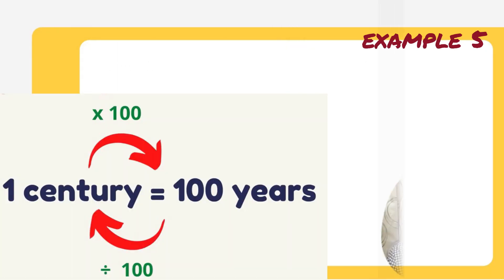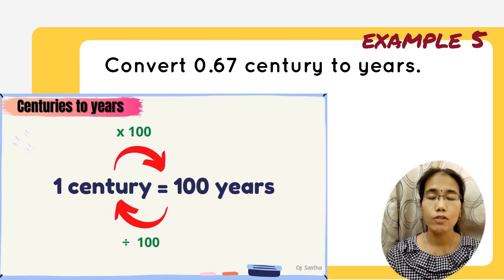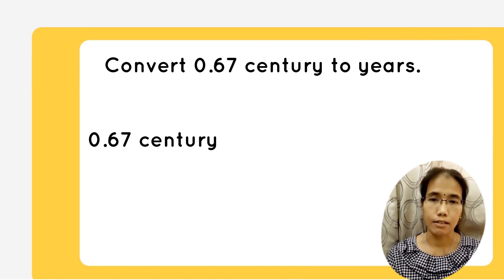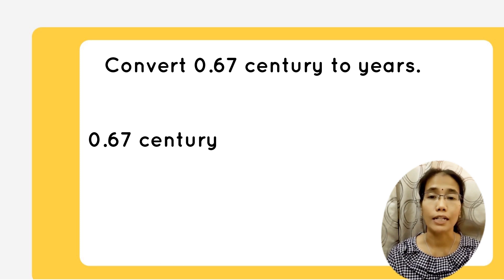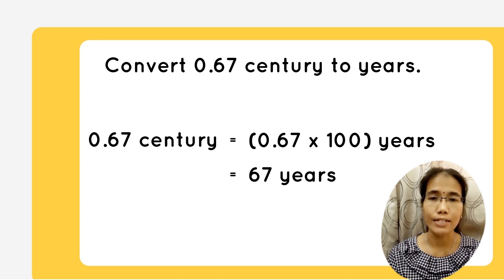We have 0.67 century, convert to years. 1 century equals to 100 years. Again, if you want to convert, you multiply with 100. So, 0.67 multiplied with 100, you will get 67 years.